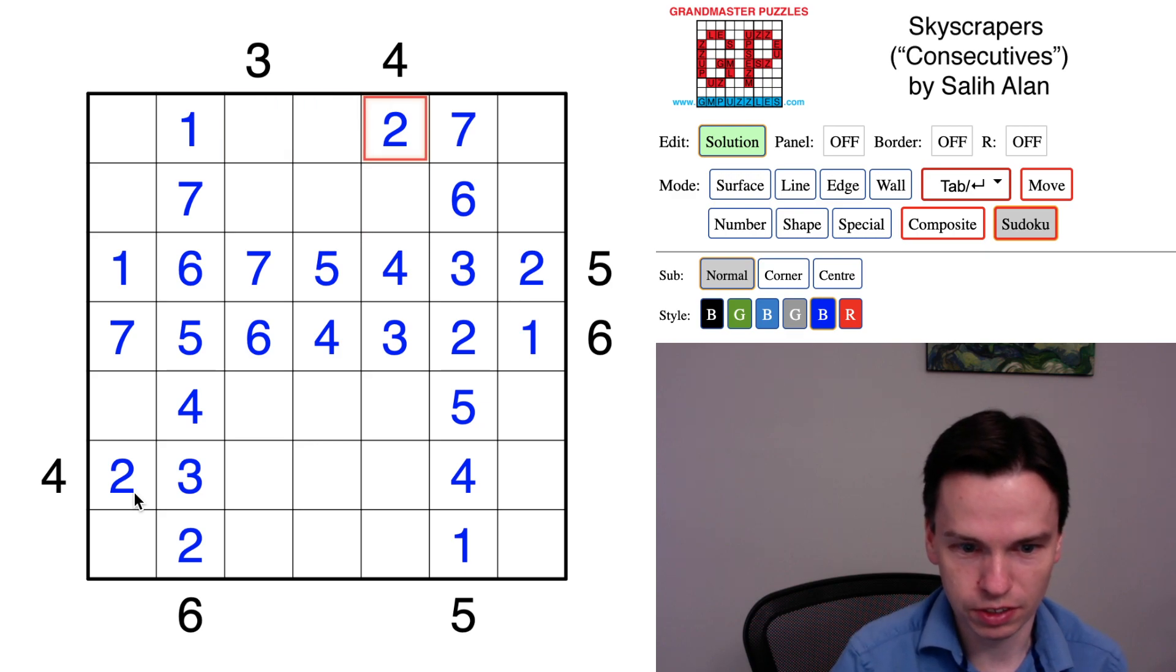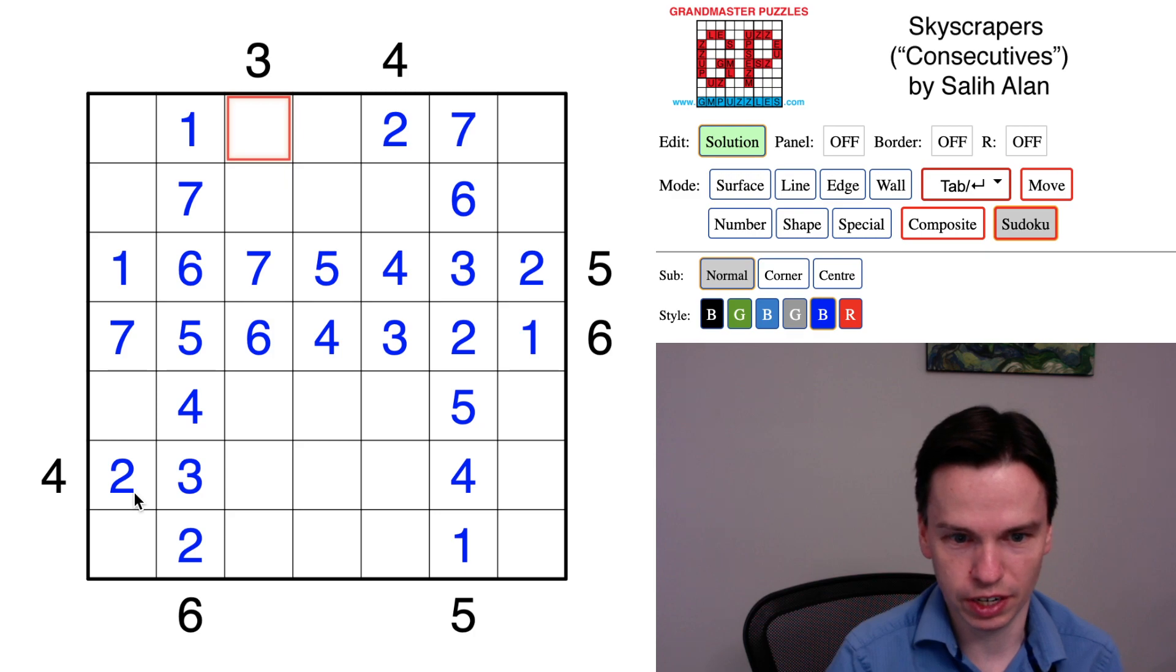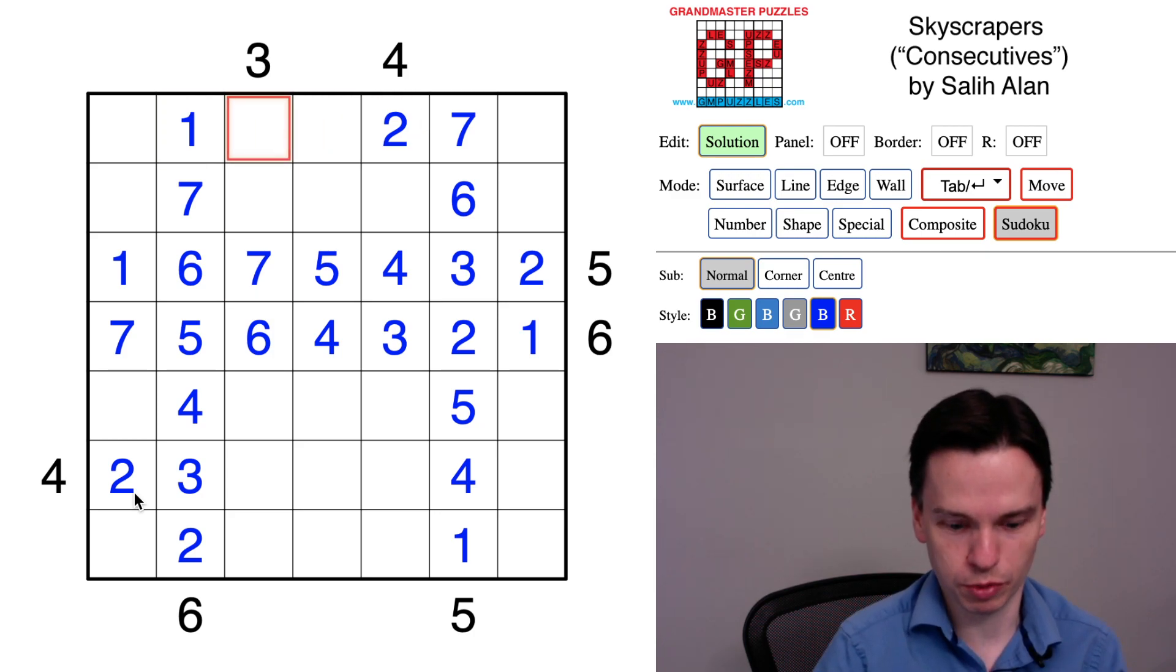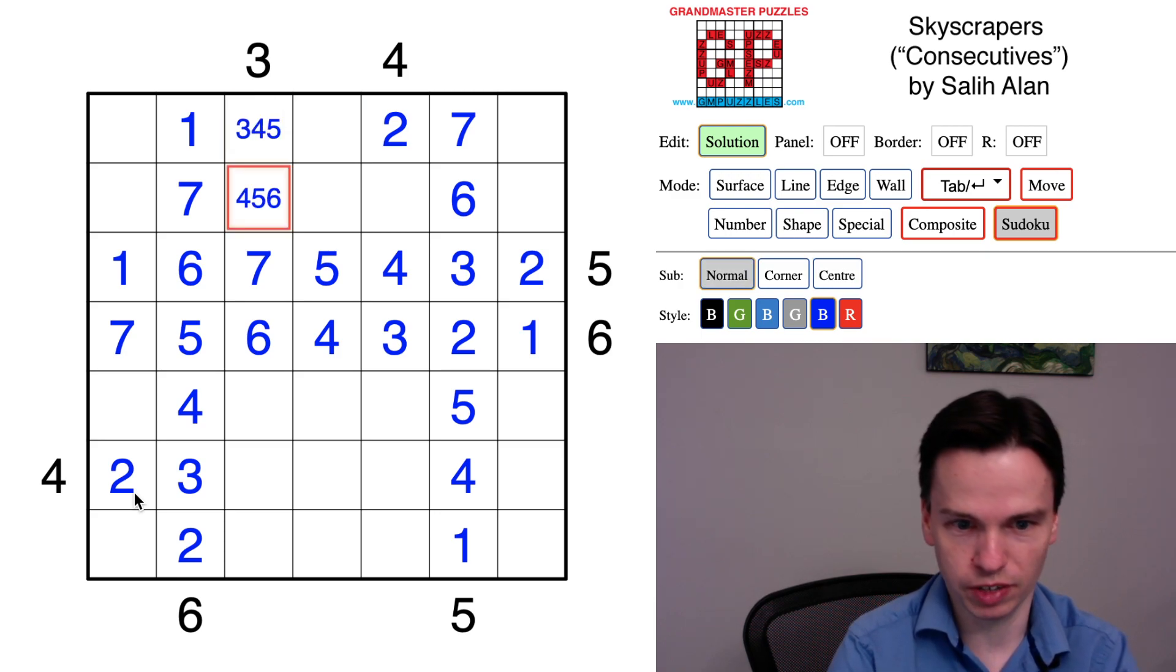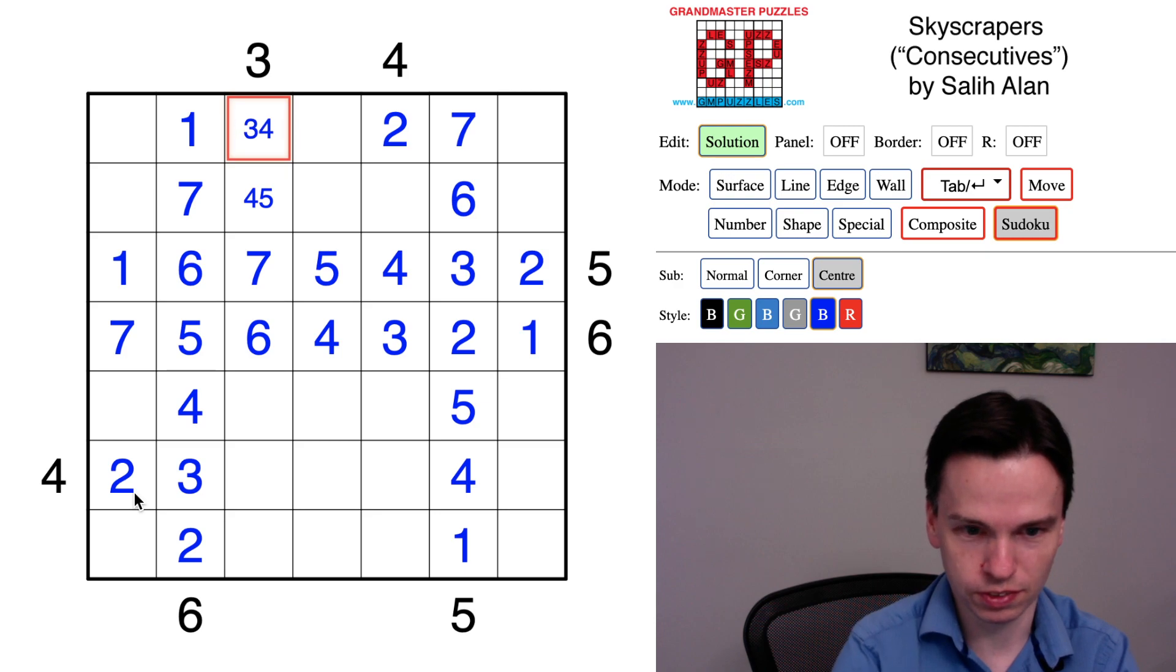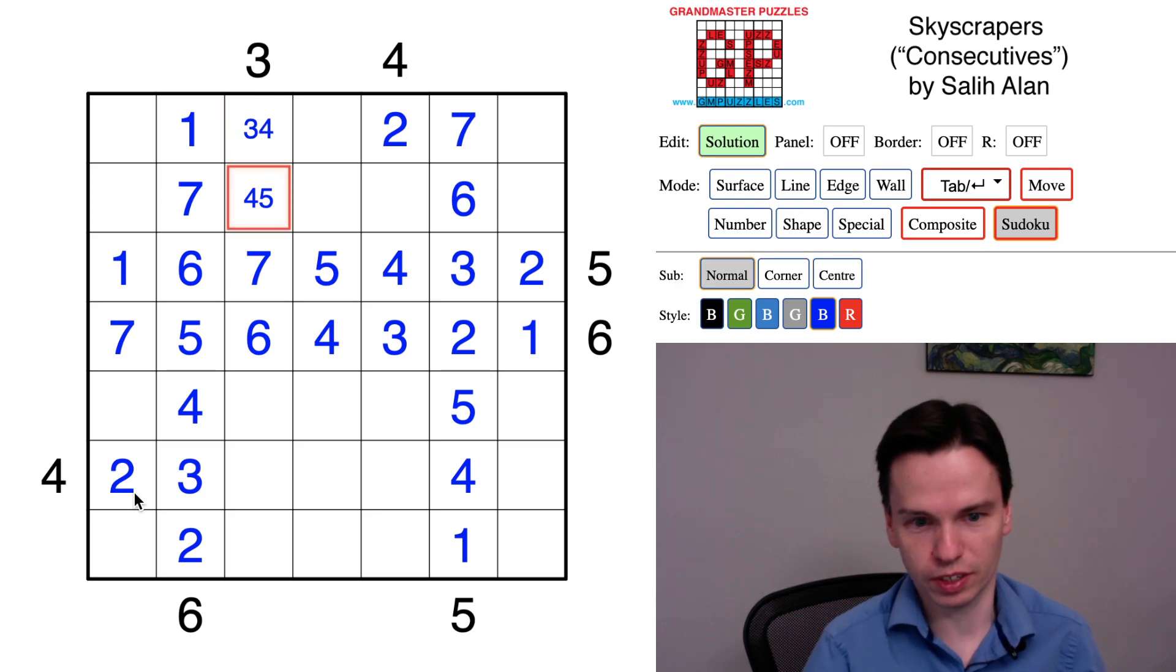We've got a different constraint though that looks like it might be key, which is that this three needs to have an increasing series coming down to the seven, and the one and two, now that they're marked, are seen. So this could be three, four, five, and this could be four, five, six, but the six is visible, so this comes down actually. So we have a three, four, and then a four, five.